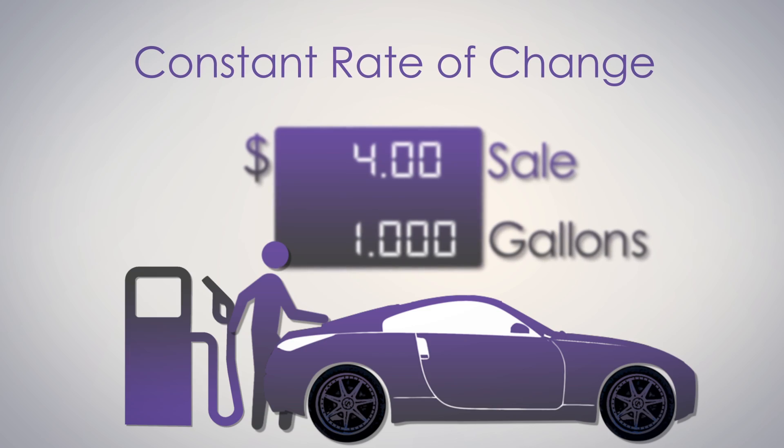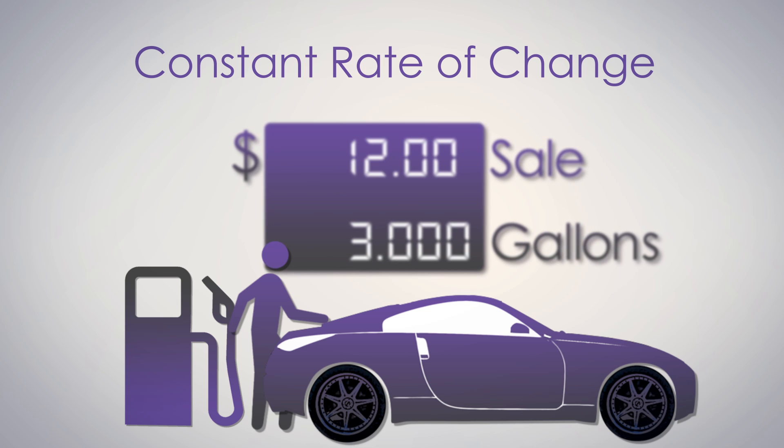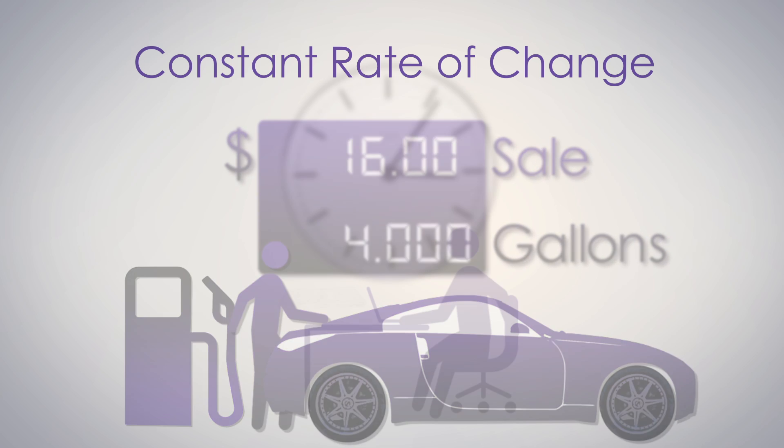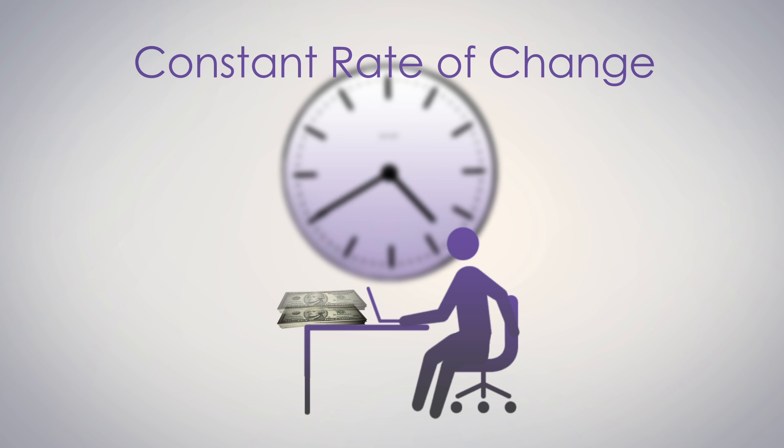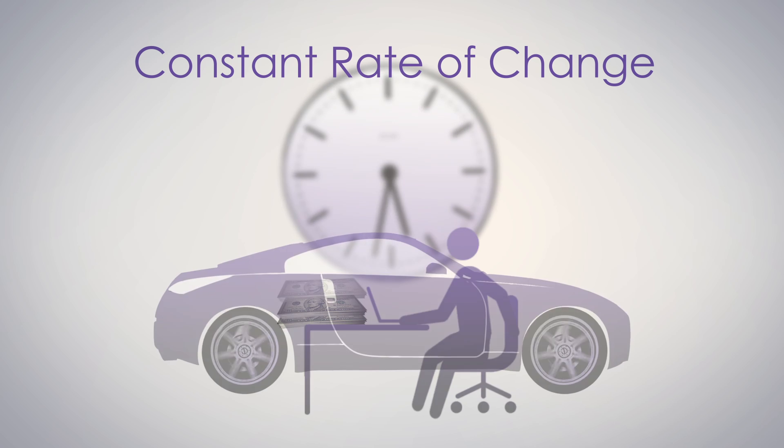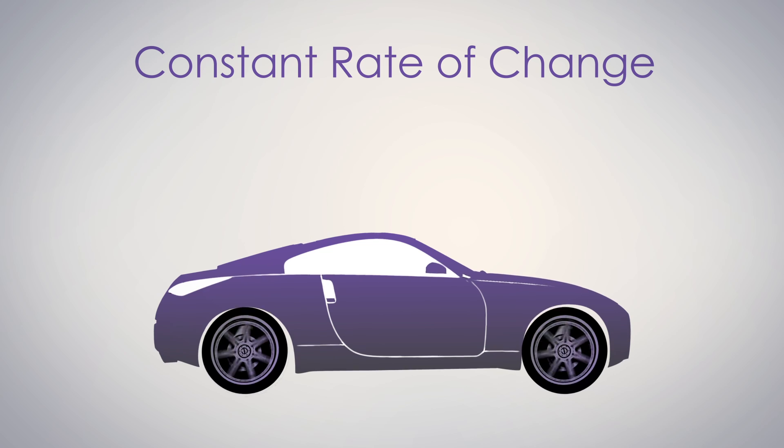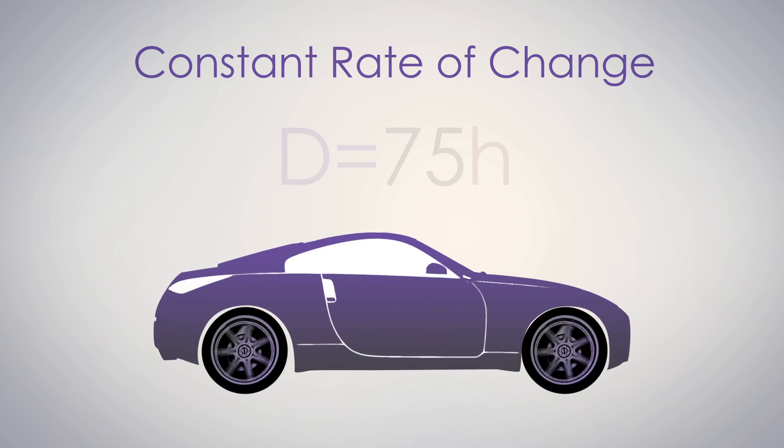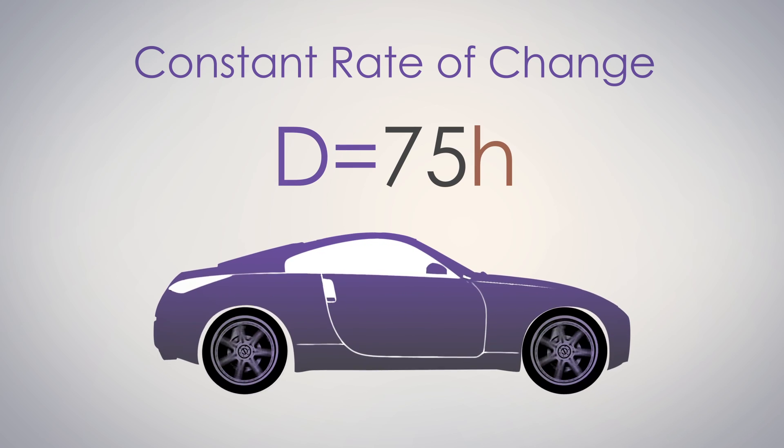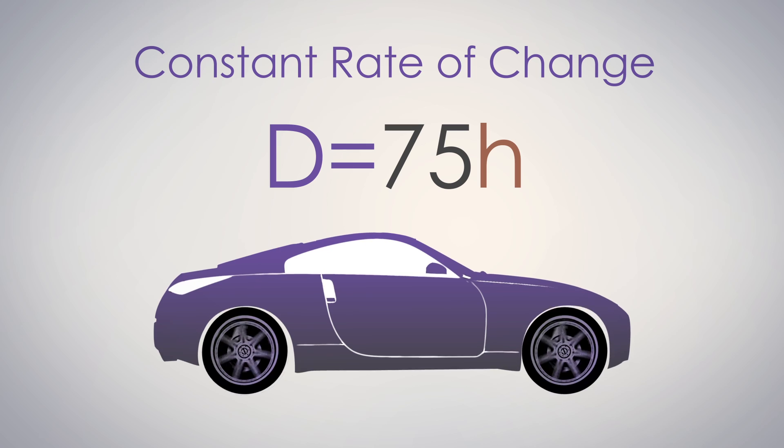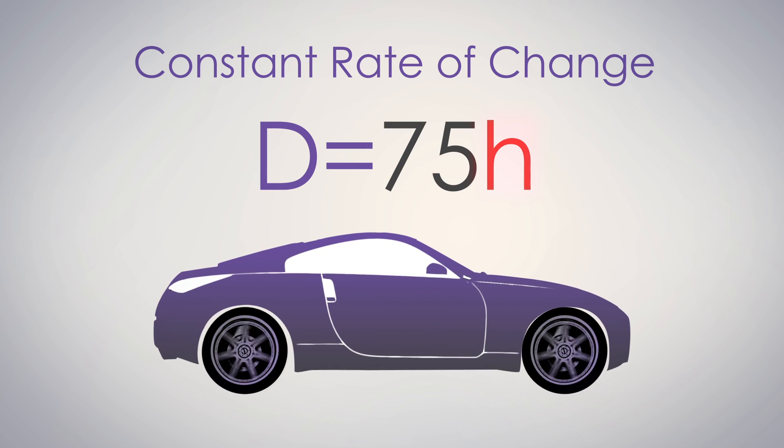So what is a constant rate of change? Imagine a traveling car that covers 75 miles each hour. We can say that the car is traveling at a constant rate of 75 miles per hour. So the distance d that the car travels can be expressed with the linear function d equals 75h, where 75 is the constant rate and h is the number of hours driven.